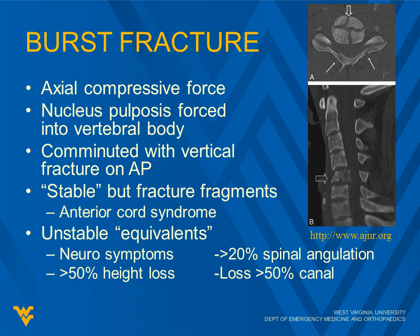Burst fractures have an axial compressive force where the nucleus pulposus of the disc is forced up into the vertebral body, creating a comminuted fracture with a vertical fracture on AP films. It is stable, but fracture fragments are an issue and can typically cause anterior cord syndrome. Unstable equivalents include fractures causing neurological symptoms, greater than 50% height loss, greater than 20% spinal angulation, or greater than 50% loss of canal. If it's really compressed, out of line, or the canal appears pinched — or if they can't feel their legs — that's a problem.